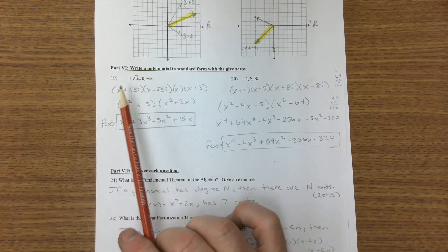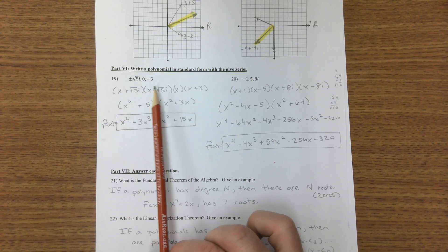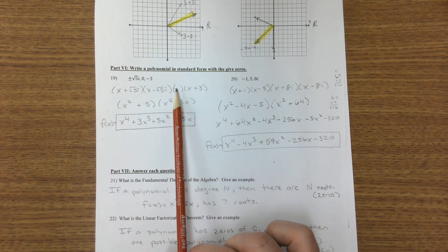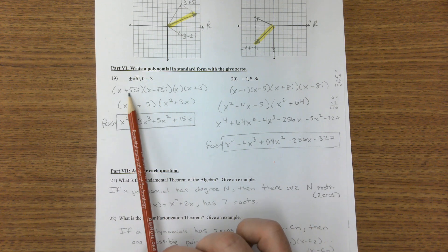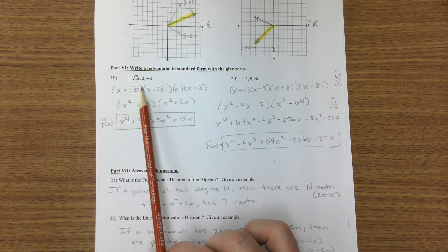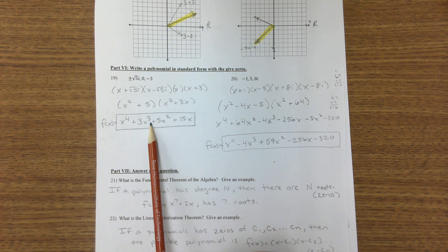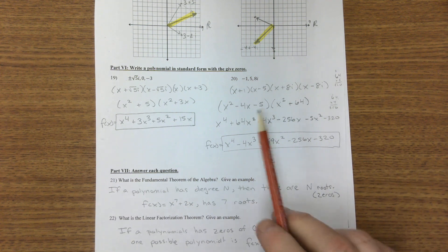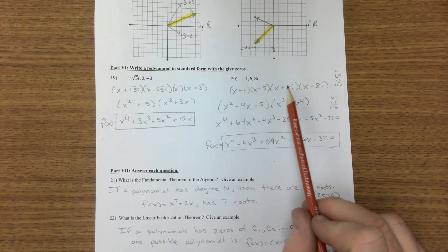Alright, polynomials. Write them like this. Foil the, or distribute this in here, distribute this in here. Foil this, multiply these two together, and there you go. On this one, you have the first two, second two.